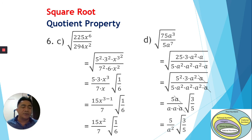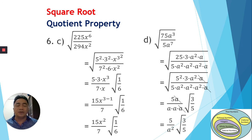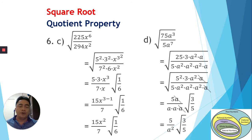That's all four examples of finding the square root using the quotient property. I hope that you understand. If you have any questions, you can comment below, and I will make more videos next time. See you and bye-bye!